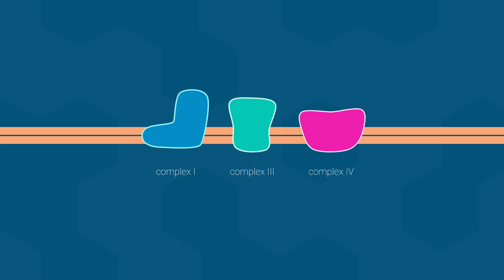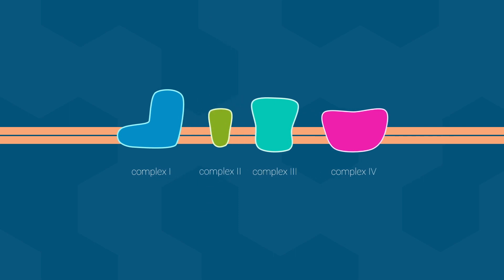As you can see, we are missing complex 2. Complex 2 is the protein involved with electrons that are transferred via FADH2. It behaves much like complex 1, except that it does not pump any protons. Electrons entering via complex 2 also move down the chain to reduce oxygen.